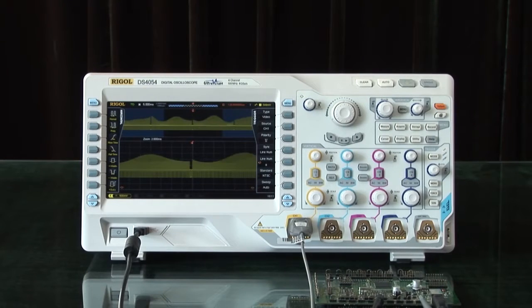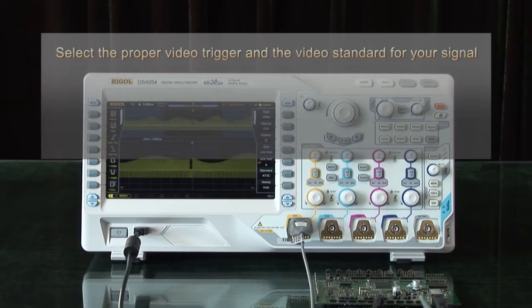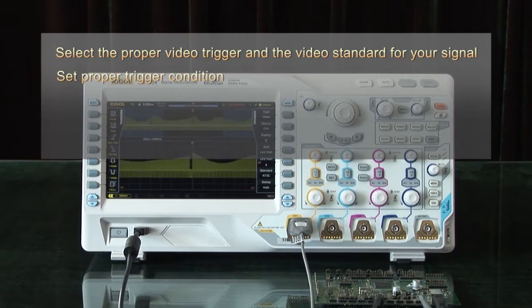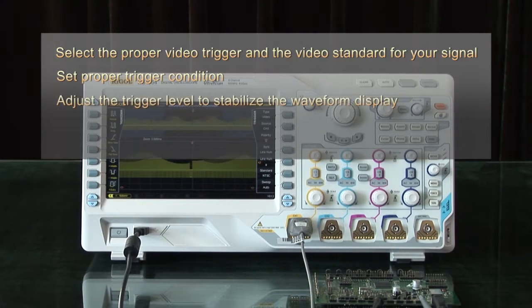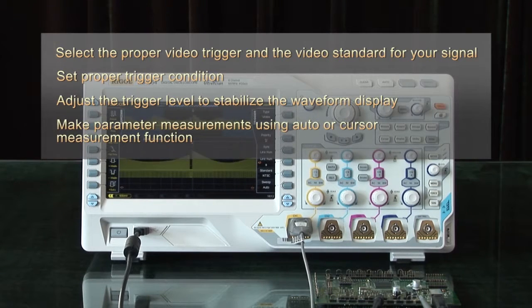This concludes the introduction to using the video trigger of a Rigol oscilloscope to measure video signals. The key points include selecting the proper video trigger and the video standard for your signal, set the proper trigger conditions, adjusting the trigger level to stabilize the waveform, and make parameter measurements using auto or cursor measurement functions.